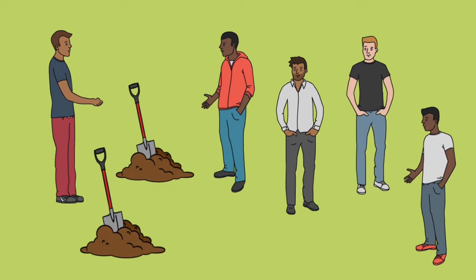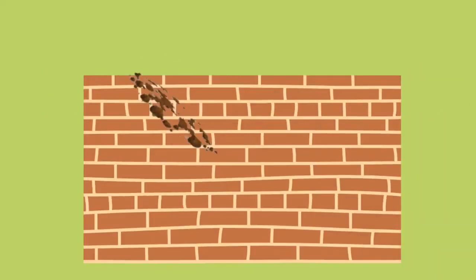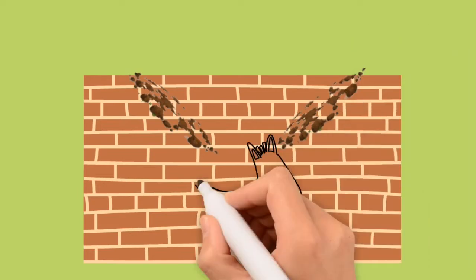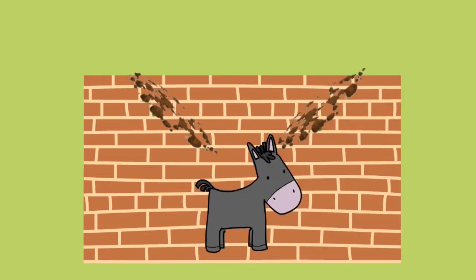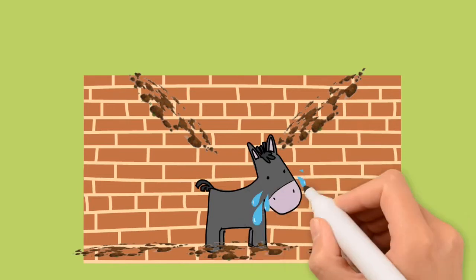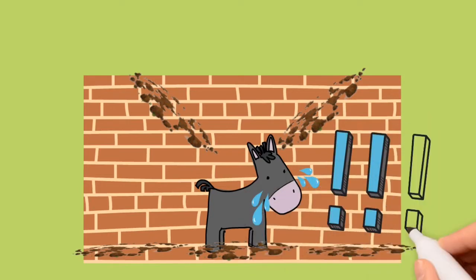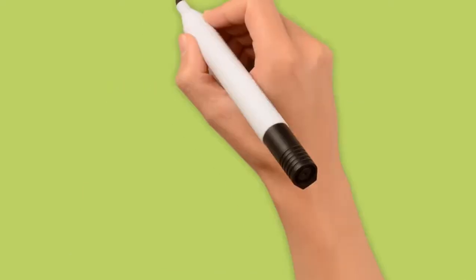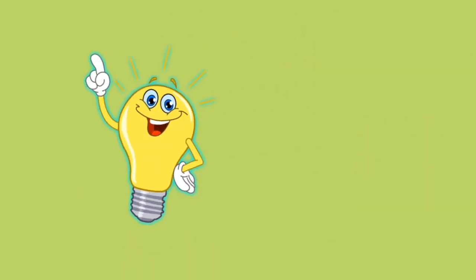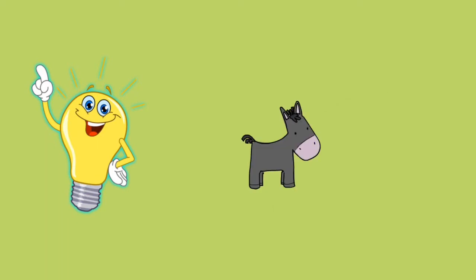Each neighbor started shoveling dirt onto the old donkey. As the animal realized what was happening, the donkey became hysterical. However, a thought struck him. It dawned on the donkey that every time a shovel load of dirt landed on his back, he should shake it off and step up.